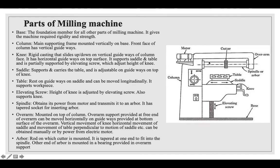In summary, the milling cutter is mounted on the spindle or arbor, which is attached to the overarm. Power is provided by a motor to the spindle so the cutter rotates. The workpiece is held on the table, which sits on the saddle. The knee is supported on elevating screws so the table can be raised or lowered. The knee slides along the vertical guide on the column, and all parts are supported by the base.